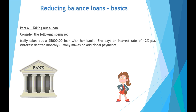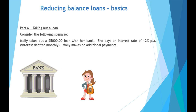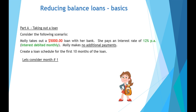This tutorial video focuses on reducing balance loans, and we'll be looking at the basics of how a reducing balance loan works. We've got the following scenario: Molly takes out a $5,000 loan from her bank. She pays an interest rate of 12% per annum, but it's interest debited monthly. In this example, Molly makes no additional payments. We're looking to create a loan schedule for the first 10 months to see what happens to Molly's amount borrowed.